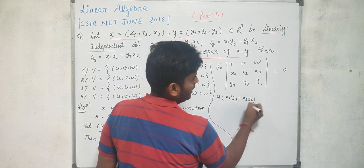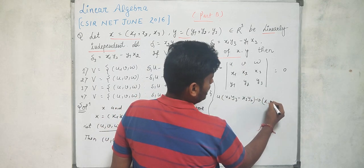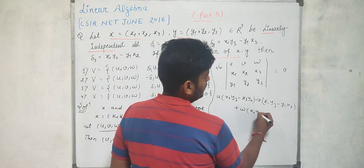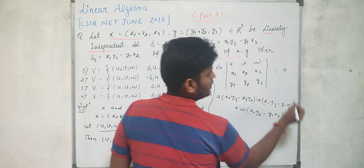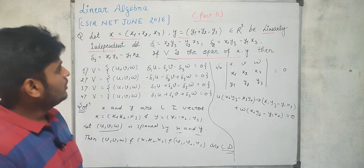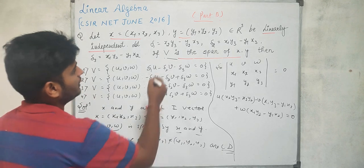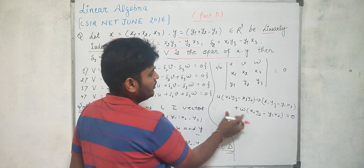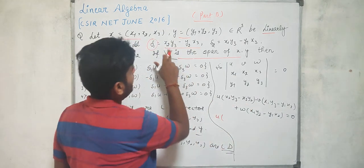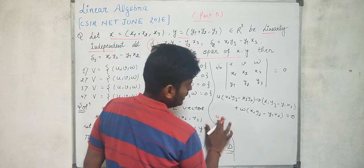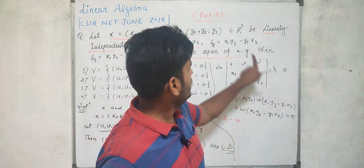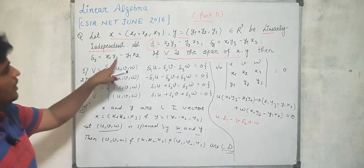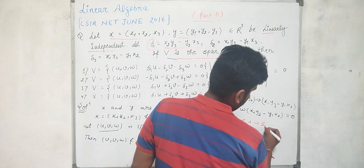Expanding by row one: U·(X2·Y3 − X3·Y2) − V·(X1·Y3 − Y1·X2) + W·(X1·Y2 − Y1·X2) = 0. Now substituting: X2·Y3 − Y2·X3 = delta1, X1·Y3 − Y1·X3 = delta2, and X1·Y2 − Y1·X2 = delta3. We get: U·delta1 − V·delta2 + W·delta3 = 0.